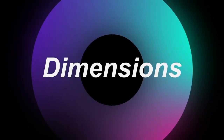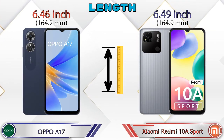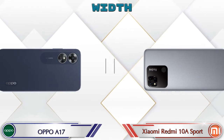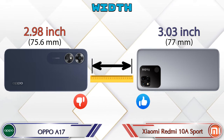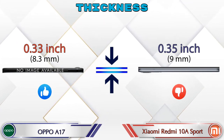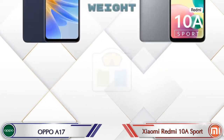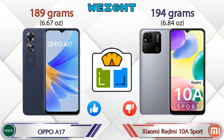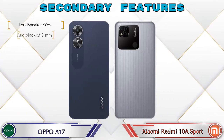Now let's check the dimensions. The length of the A17 is 6.46 inches and the Redmi Note 10S is 6.49 inches. The width of the A17 is 2.98 inches and the Redmi Note 10S is 3.03 inches, which is wider than the A17. Regarding weight, the A17 is 189 grams and the Redmi Note 10S is 194 grams, which is heavier than the A17.